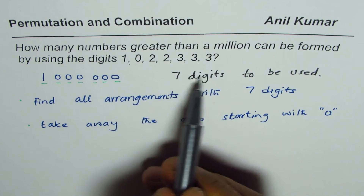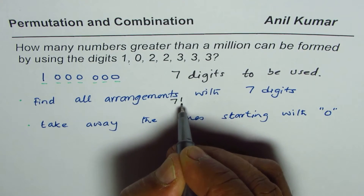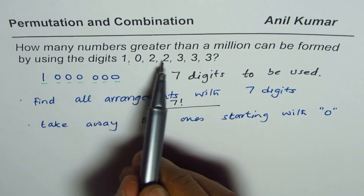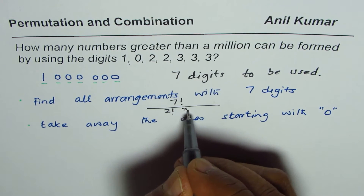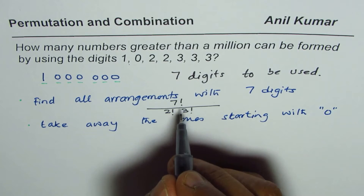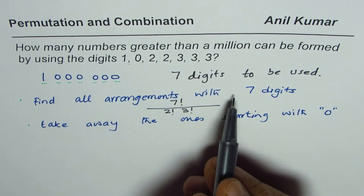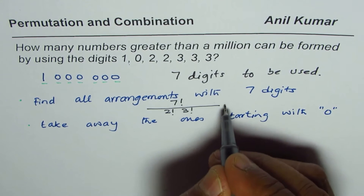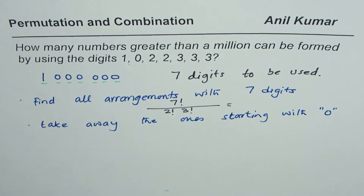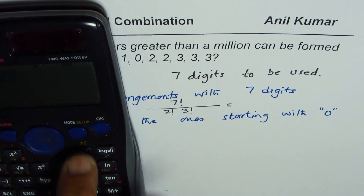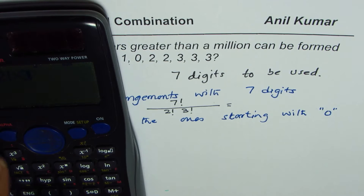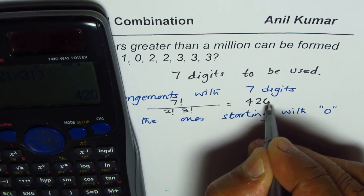For step one, find all arrangements using all seven digits. Since 2 repeats twice and 3 repeats three times, the total arrangements are 7! divided by (2! × 3!). Using the calculator, 7! divided by (2! × 3!) equals 420. So we have 420 total arrangements.